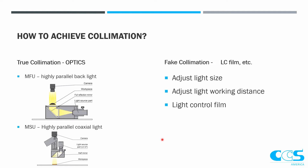They're essentially collimating the light that comes out of the light. Versus fake collimation is where we can either adjust the size of the light, working distance, or use a light control film that just blocks the light that's not collimated.